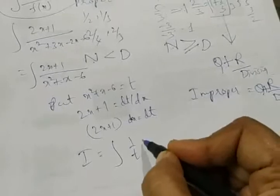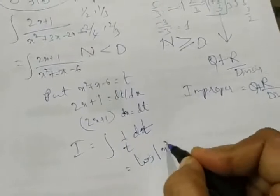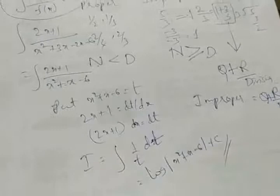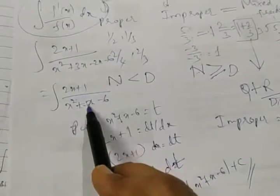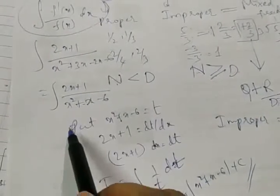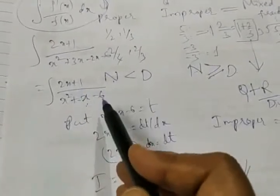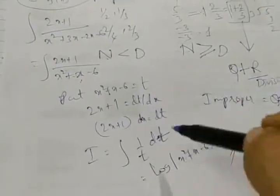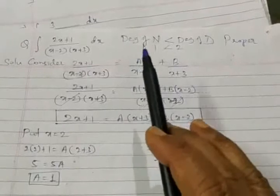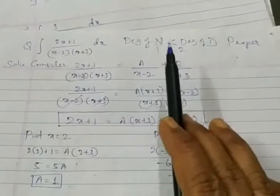We got the substitution answer: log|x² + x - 6| + C. But now let me also do the same problem using partial fractions to show the method. For partial fractions, consider only the function part: (2x + 1) upon (x - 2)(x + 3). The denominator has non-repeating linear factors, so apply rule number 1. Rule 1 says we can write this as A upon (x - 2) plus B upon (x + 3).